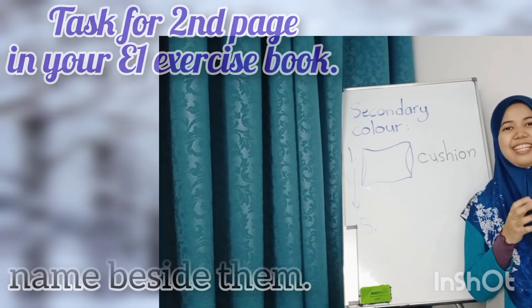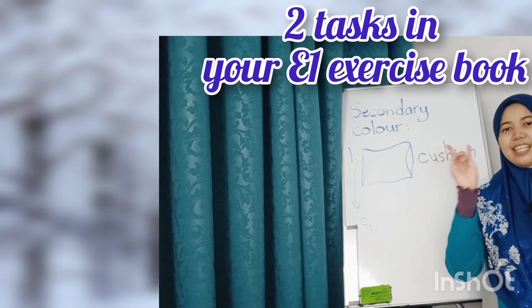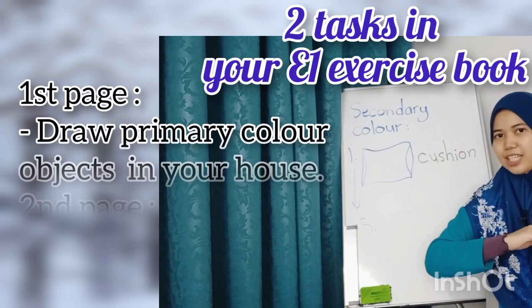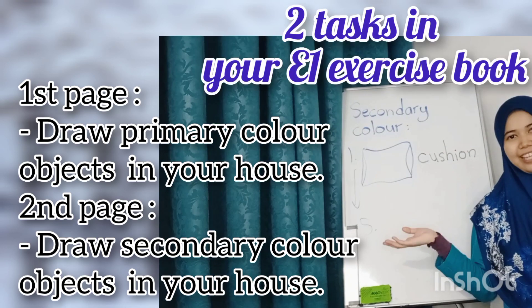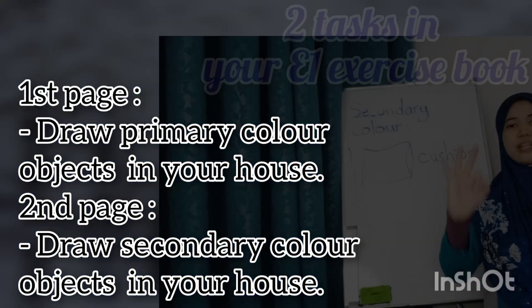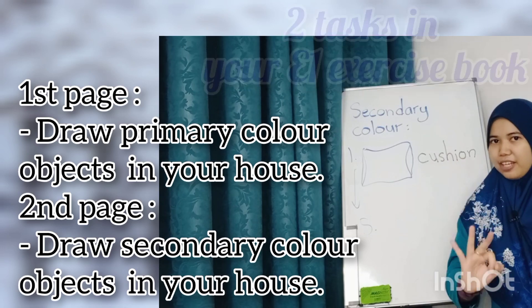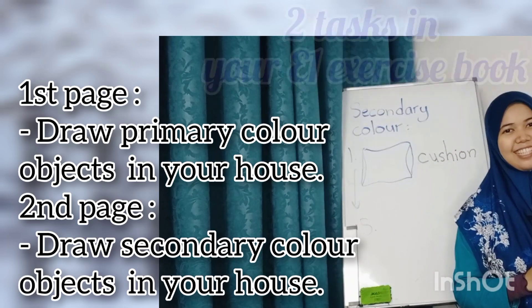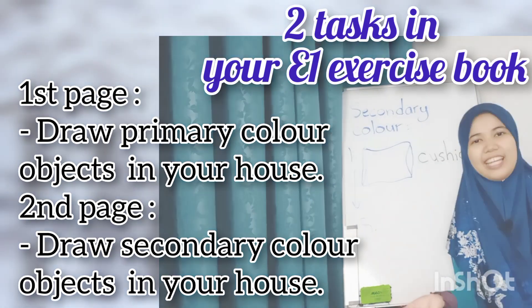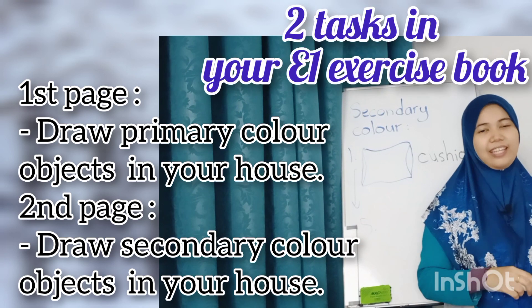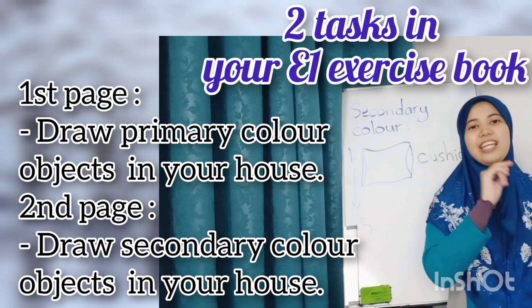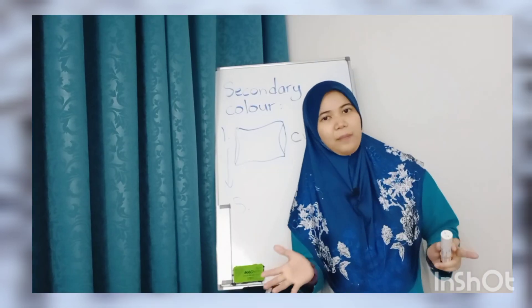So there are two tasks in your E1 exercise book. The first page is the primary color objects and the next page is the secondary color objects. You need at least six things total — three for primary colors and three for secondary colors. That's all for today. I hope you can complete your tasks very well. I want to see your complete drawing in our next Google Meet — I will inform you when that is. Assalamualaikum warahmatullahi wabarakatuh, see you next time, bye!